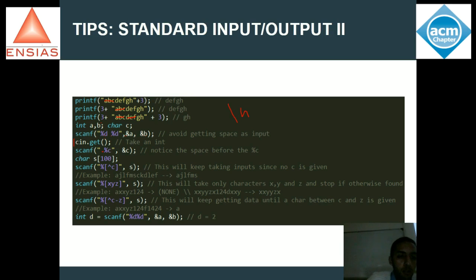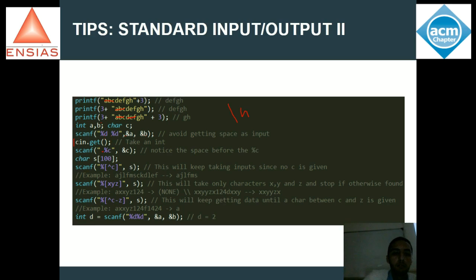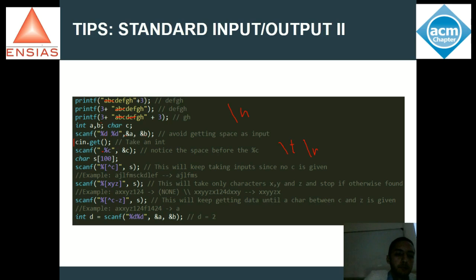Pour résoudre ce problème, il y a deux cas. Le premier cas : cin.get. Quand j'utilise cin.get, je prends un entier. Puisque tous les caractères se transforment en ASCII code, je prends un entier, dans ce cas le backslash N. Parfois, je veux vraiment taper plusieurs fois sur entrée mais prendre mon caractère. Tout simplement, tu peux ajouter un espace vide ici. Quand tu ajoutes un espace vide, il évite tous les tabulations, les backslash N, les espaces. Donc il attend vraiment un vrai caractère. J'ai créé un tableau de 100 éléments. Puisque je travaille seulement avec scanf et printf, j'utilise ça comme ça.